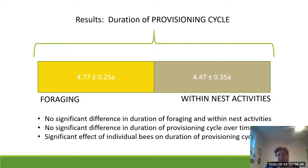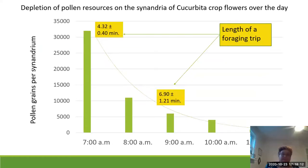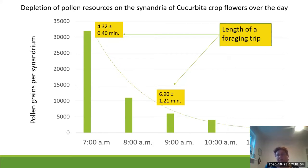However, there was a significant effect of individual bees on the duration of provisioning cycles — some bees were much more efficient provisioners than others. We also found a significant difference in the length of the foraging trip over time: the foraging trip at 7am was about 4.32 minutes, while at 9am it was about 6.9 minutes — almost one and a half times longer. This is explained by pollen depletion: a graph of pollen grains per synandrium over time shows a very steep decline between 7 and 9am in the amount of pollen available.